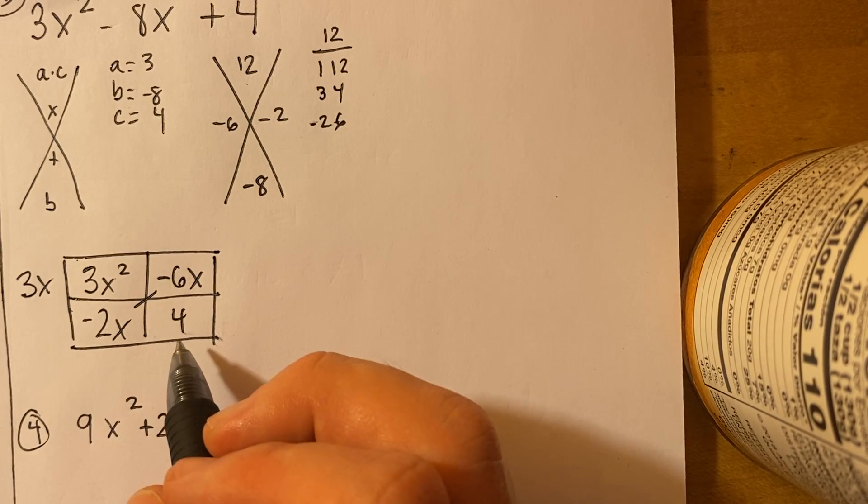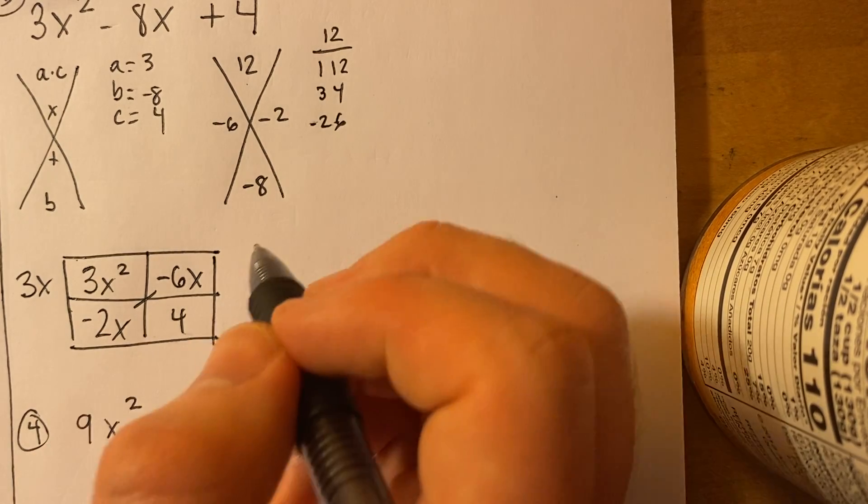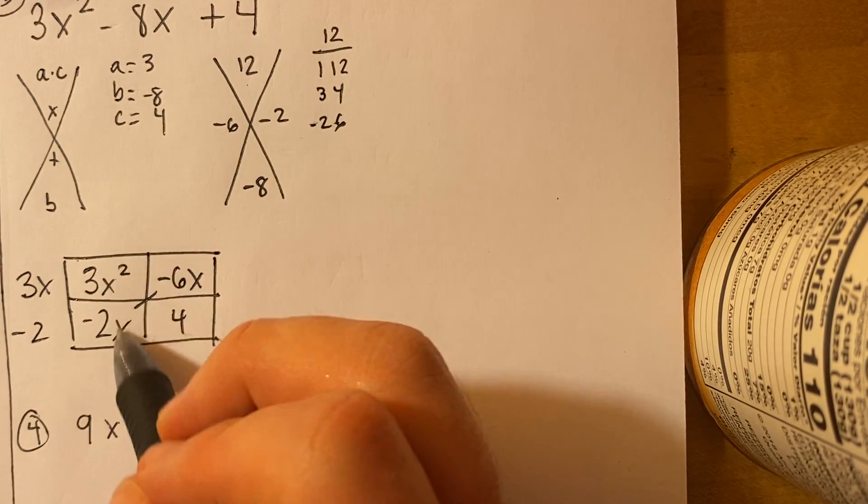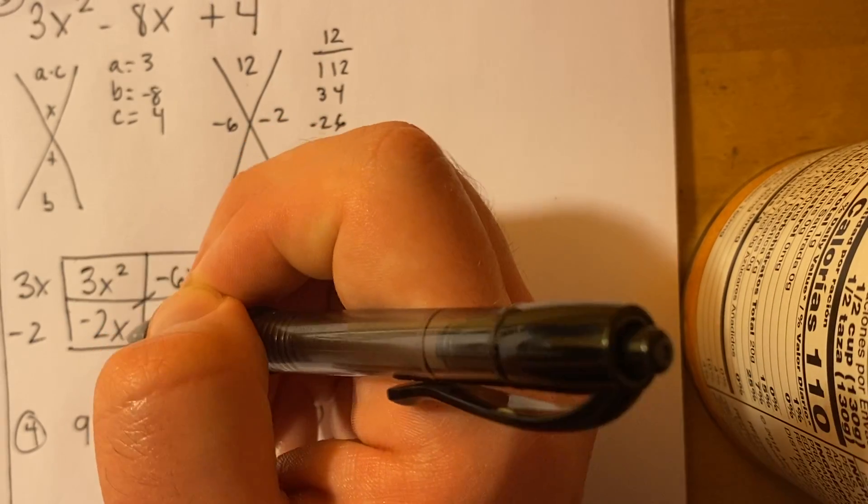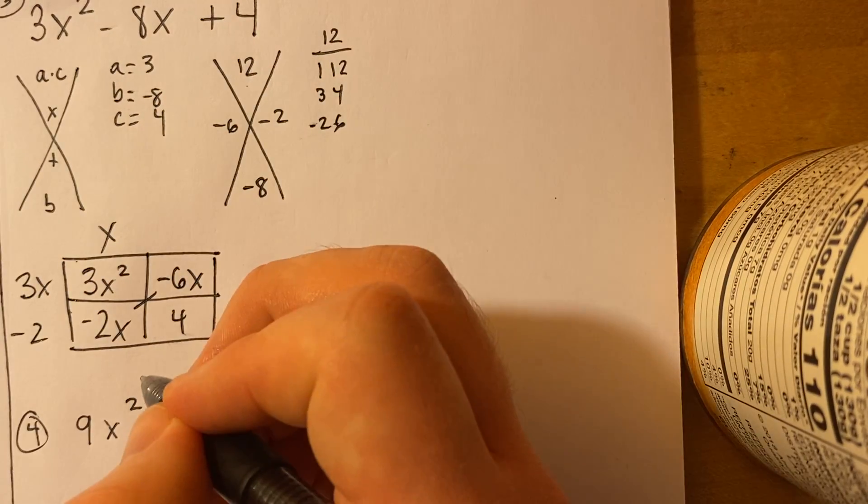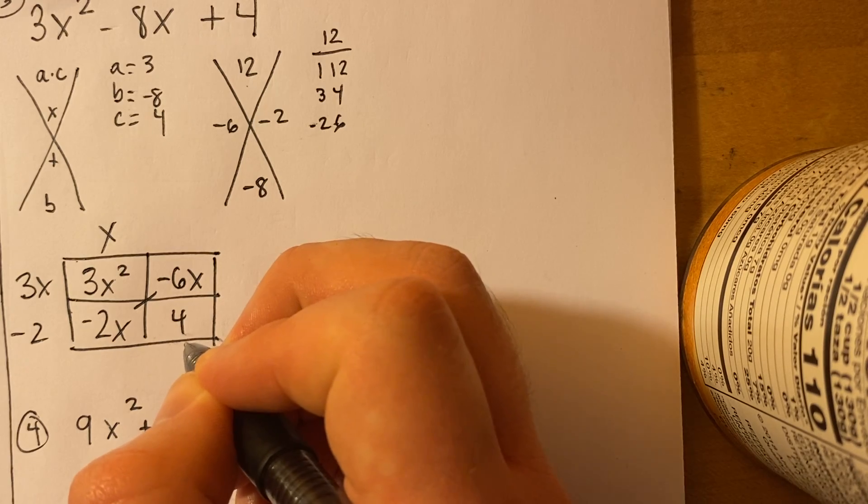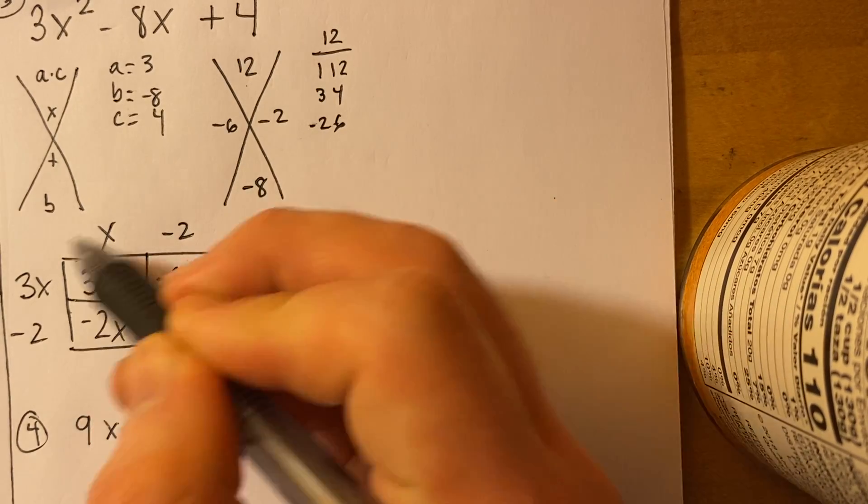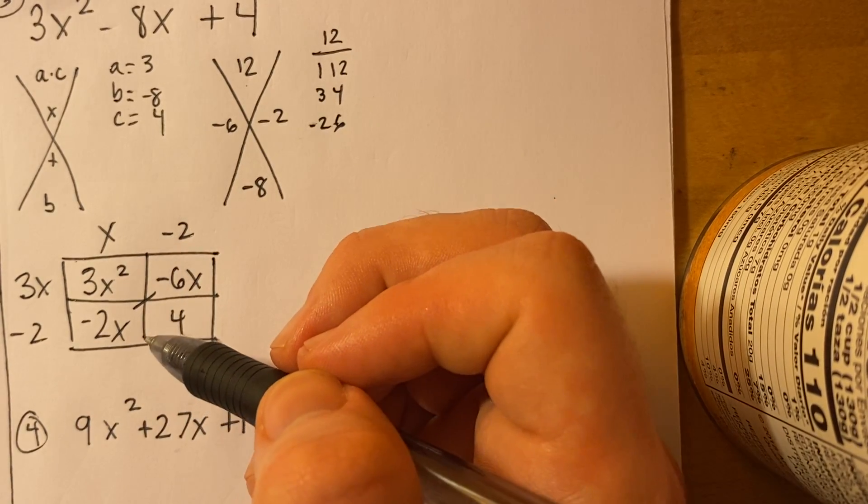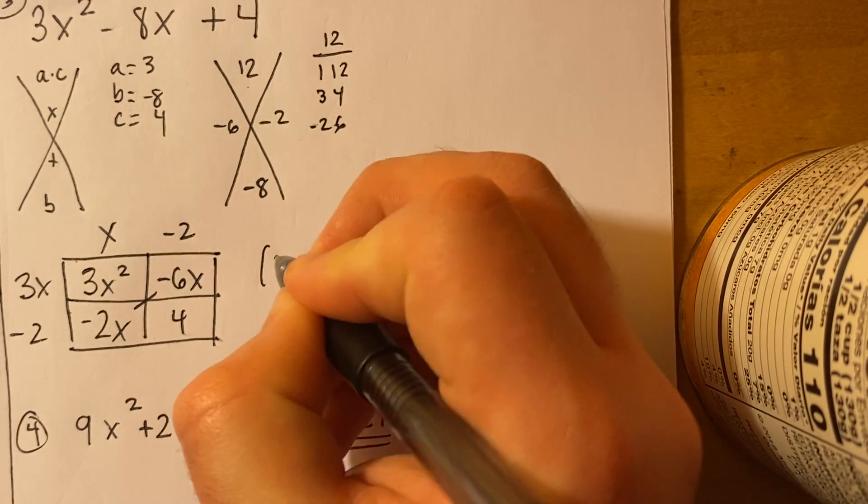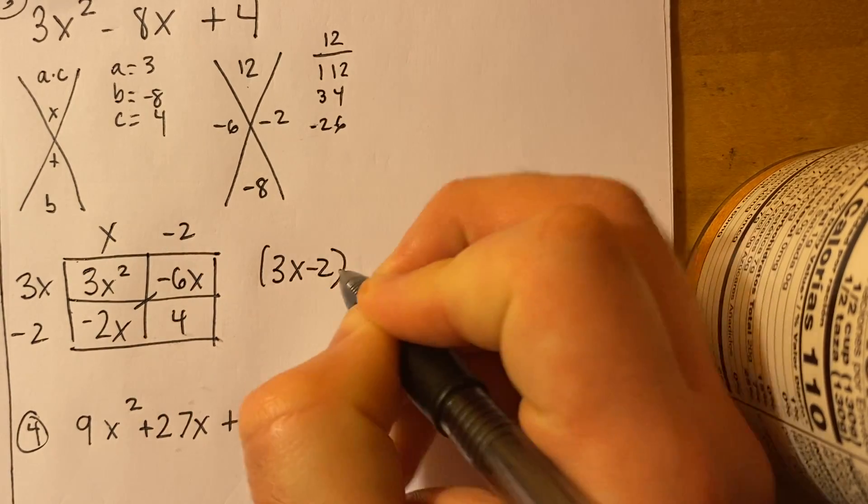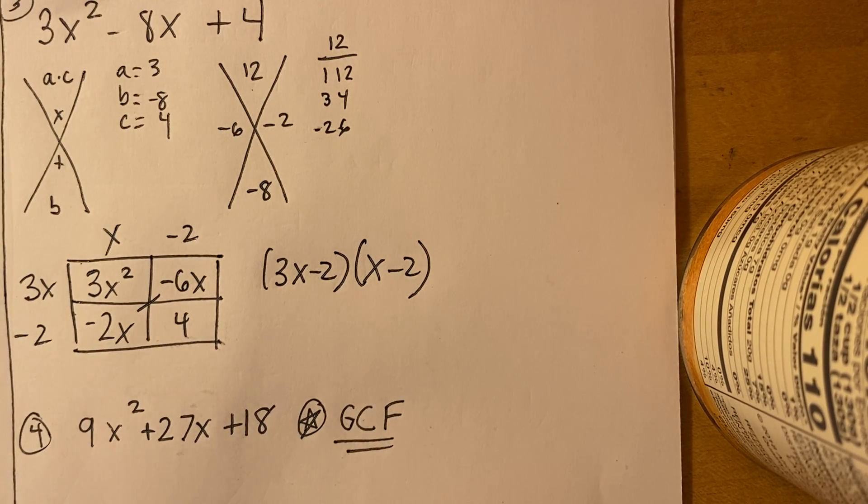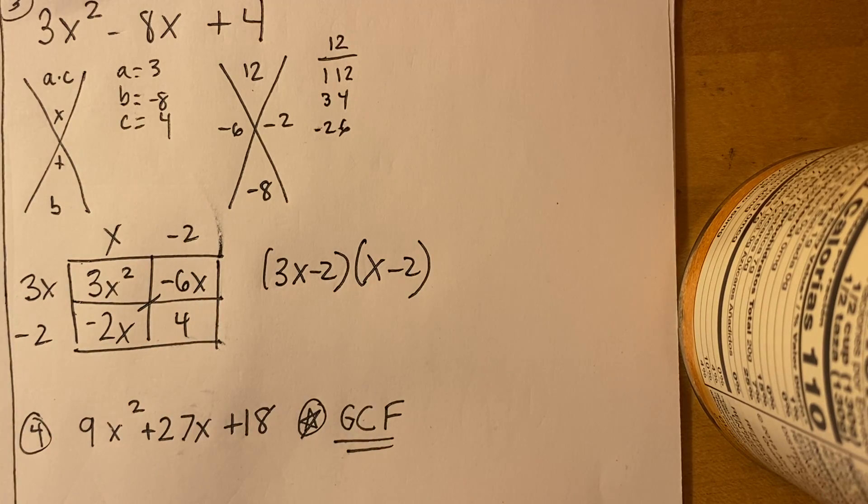So then our next step is just to factor out the GCF. So I noticed that these two share a 3 and they share an x, so I'm just going to write 3x there. And I noticed that these two share a 2, but nothing else. But the trick here is, I'm going to do a negative 2 and you'll see why. So then at the top, I noticed that I just multiply by x here, and then for this one, I'm going to multiply by negative 2. So here's the trick. You have to make sure that the box works out perfectly. So here we have 3x - 2 and then x - 2. So just be careful when you have that negative there. Make sure the box works out nicely.